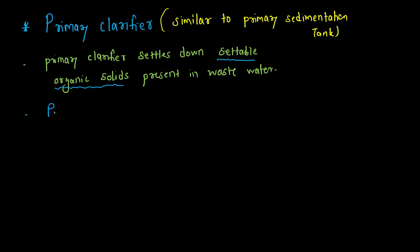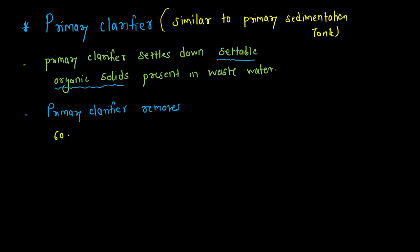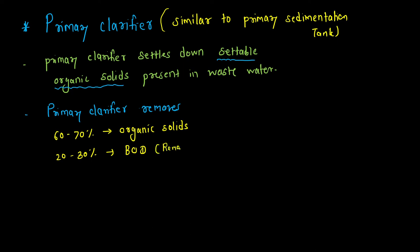The primary clarifier removes 60 to 70 percent of organic solids and 20 to 30 percent of BOD. This is the percentage of BOD which is removed.